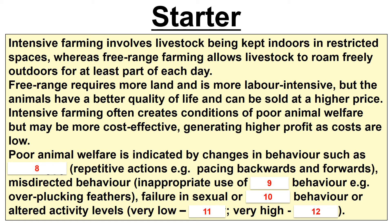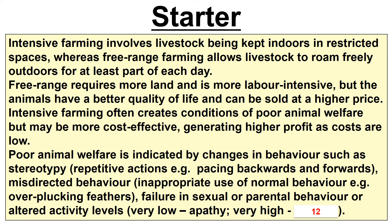The remaining answers cover the indicators of poor animal welfare. Number eight is stereotypy — repetitive actions, e.g. pacing backwards and forwards. Nine is misdirected behaviour — inappropriate use of normal behaviour, such as overplucking feathers. Ten is failure in sexual or parental behaviour — refusing to mate or not caring for young in the normal way. Eleven and twelve are altered activity levels: very low is apathy, and very high is hysteria.